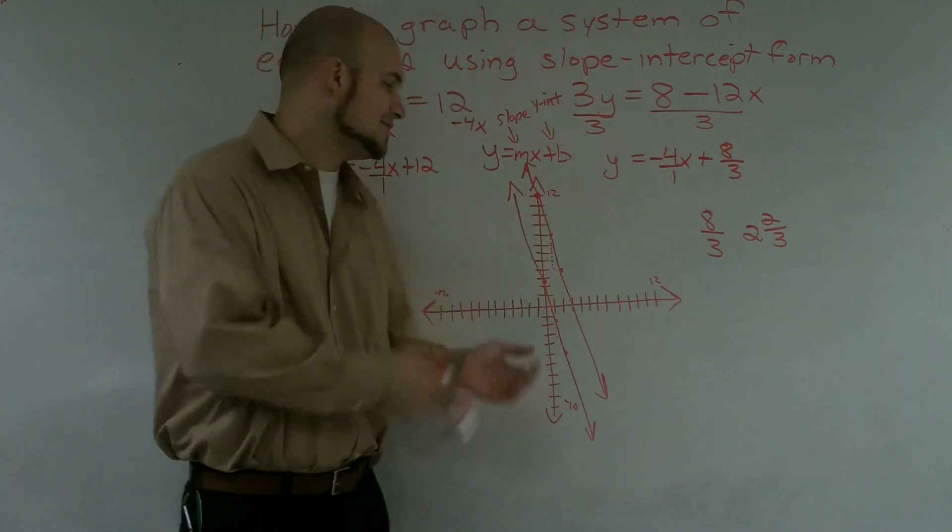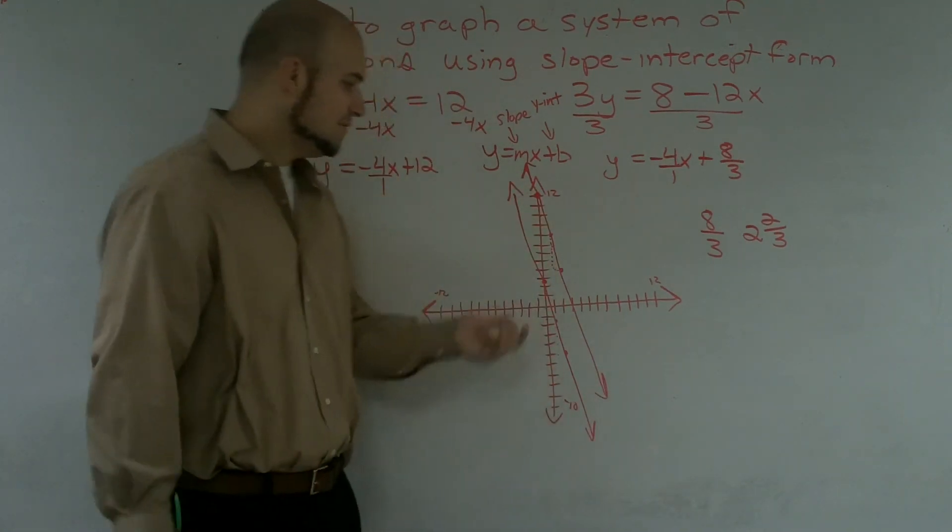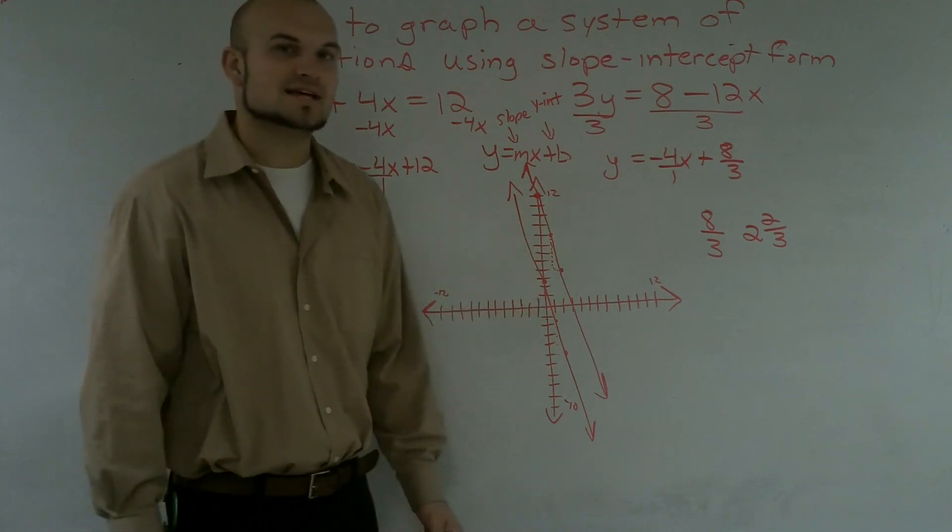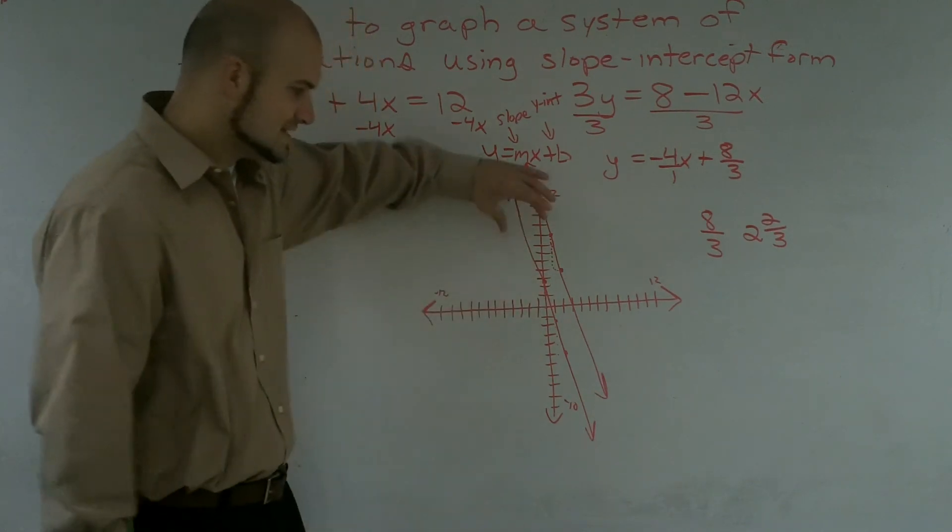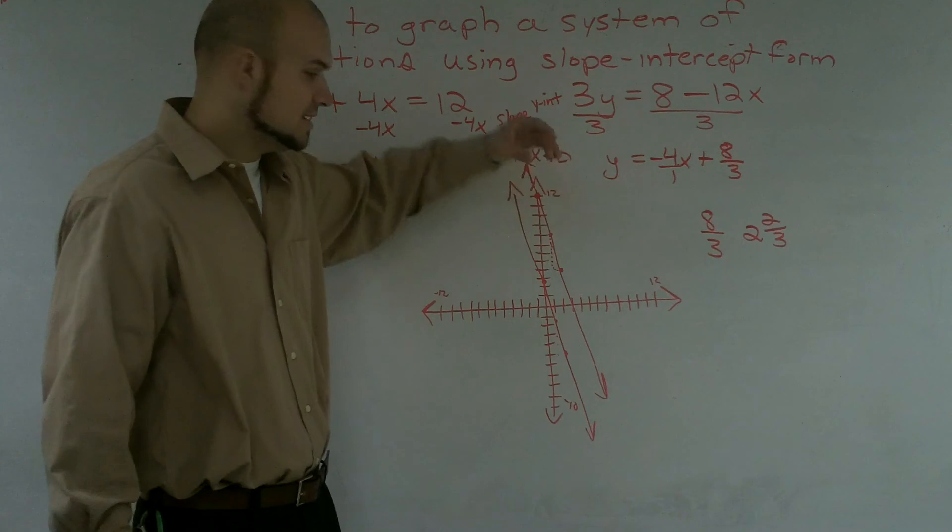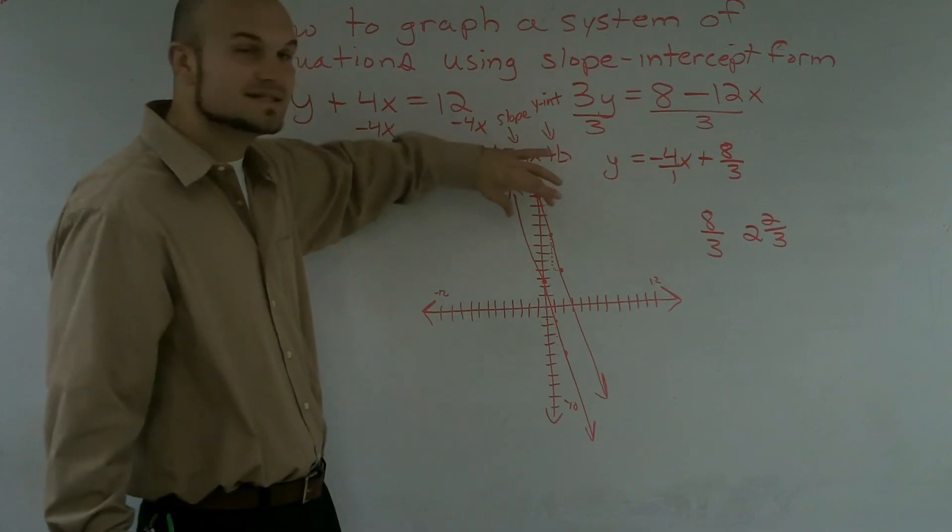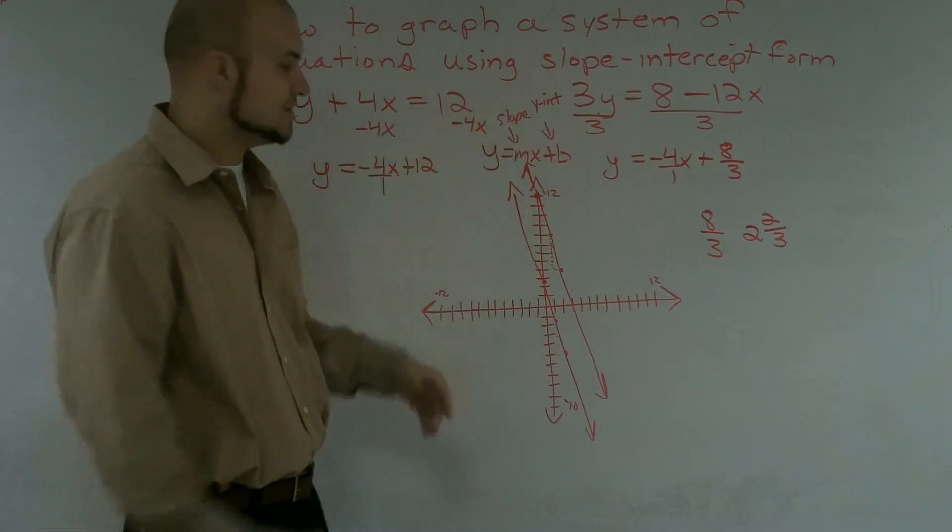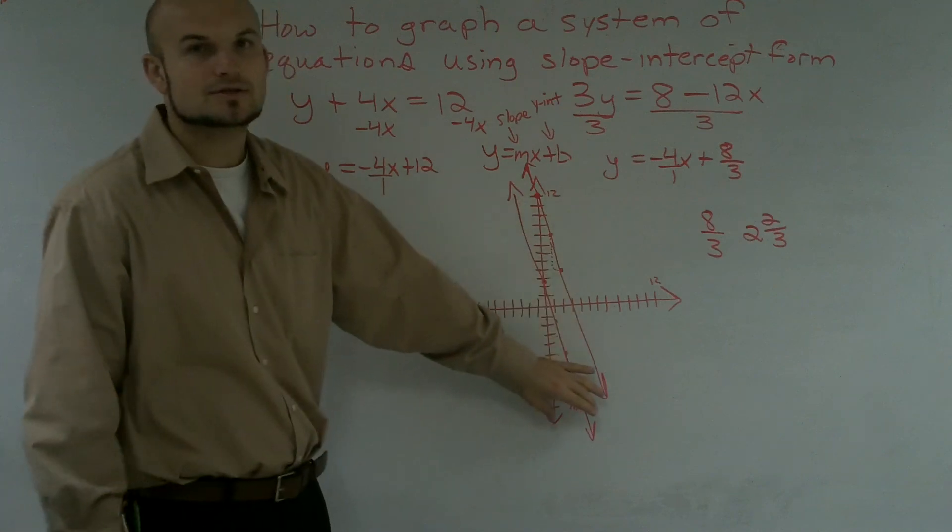And by following my rough sketch of my graph, what I notice is these lines are never going to intersect. So, therefore, this is an inconsistent graph and there is no solution to the graph. There's no place where the two equations intersect.